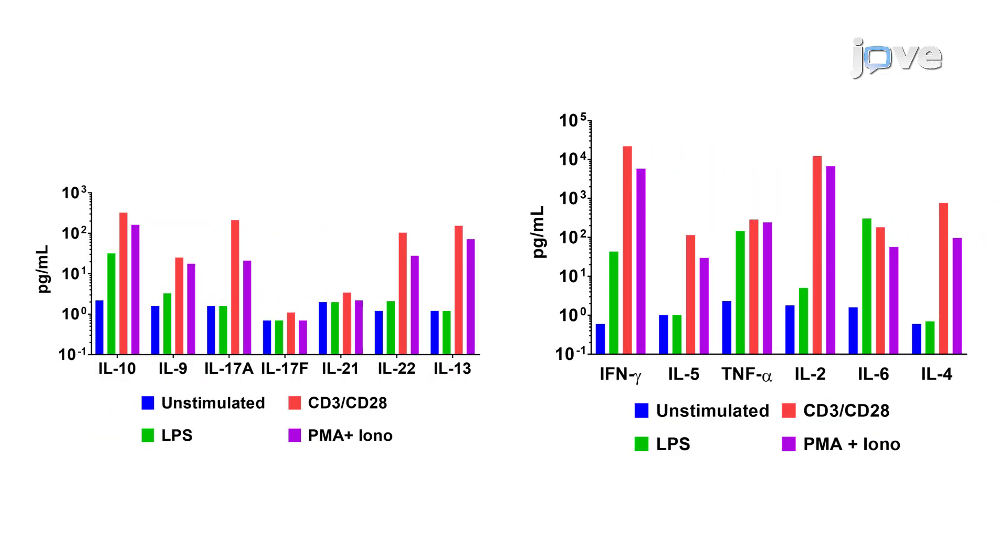Mouse splenocytes were cultured under various conditions for 48 hours. Culture supernatants were collected and then concentrations of 13 targets were quantified using the mouse T helper cytokine panel. Differential cytokine expression profiles in response to stimulation conditions are clearly visible.